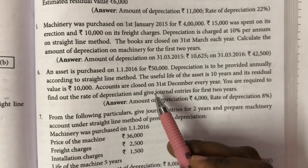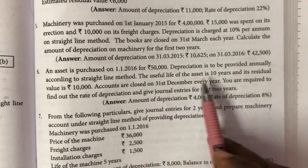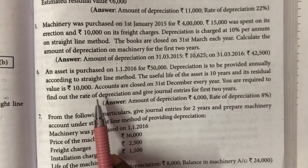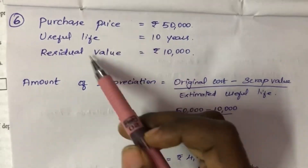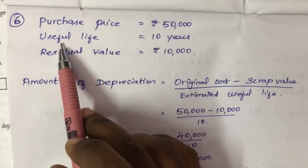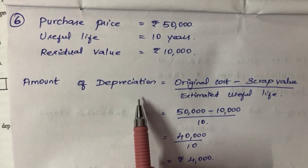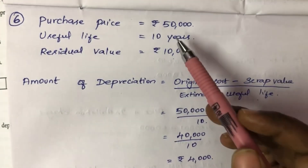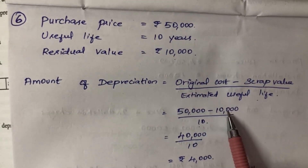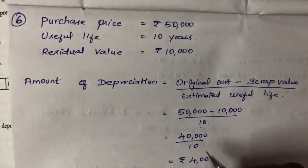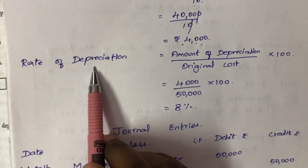In this example, purchase price, residual value, and useful life of the asset are given in years. We need to find the rate of depreciation and journal entries. What is given: purchase price is 50,000 rupees, useful life is 10 years, residual value is 10,000 rupees. Amount of depreciation equals original cost minus scrap value divided by estimated useful life: 50,000 minus 10,000 divided by 10 equals 40,000 divided by 10, so 4,000 rupees. This is the amount of depreciation.